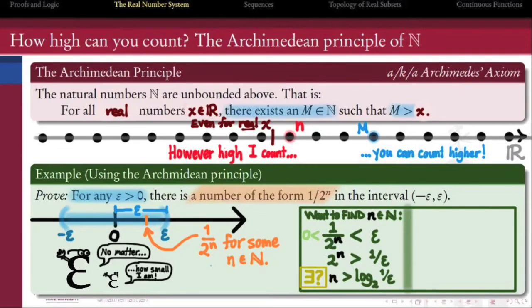How do we know that a natural number n exists which is bigger than the base 2 log of 1 over epsilon? Well, if the base 2 log of 1 over epsilon is a real number, then by Archimedes, such a natural number n must exist that's greater than the base 2 log of 1 over epsilon.